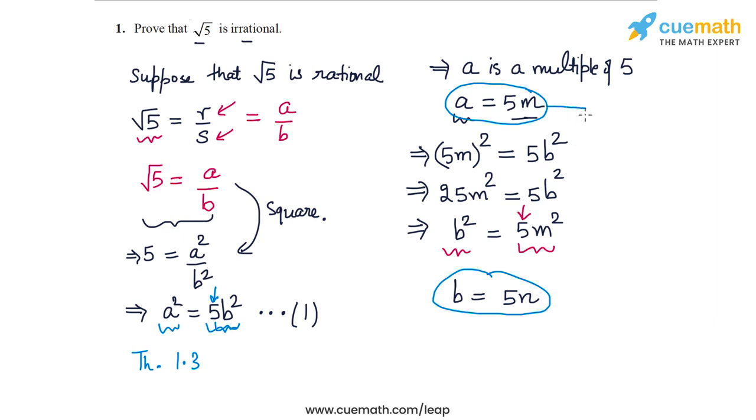But this, these two relations put together, this is a contradiction. Because in this form, a equal to 5 m and b equal to 5 n, both a and b have a common factor of 5. And when we started out our analysis, we assumed that a and b have no common factor.